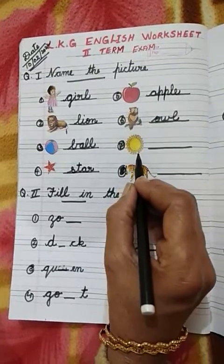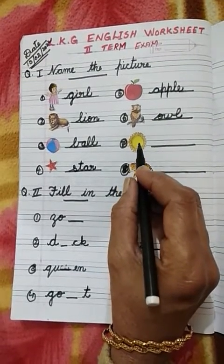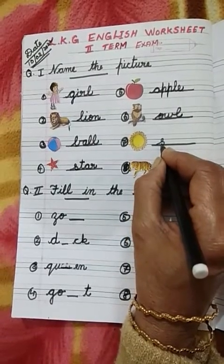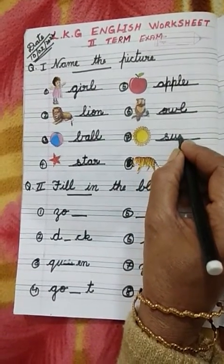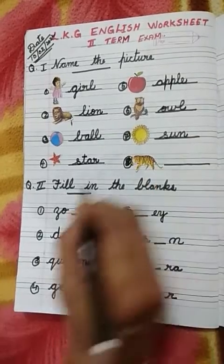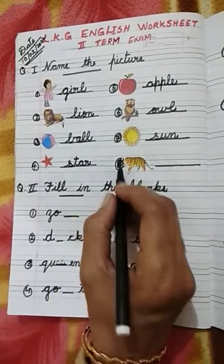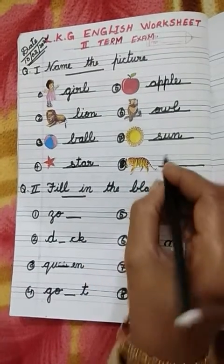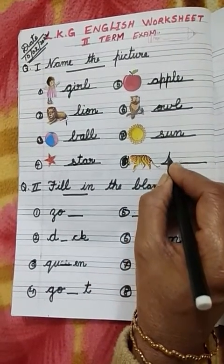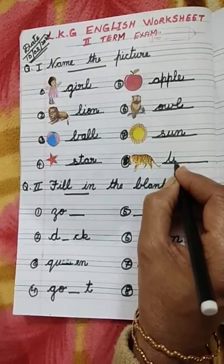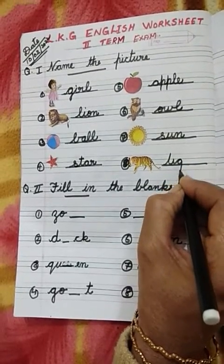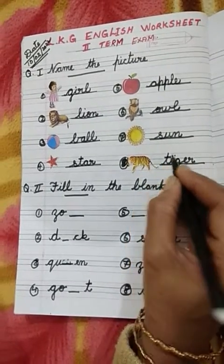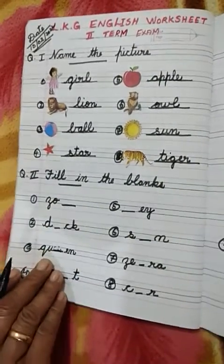Tell me children, what is this? Sun! Then spelling of sun: S-U-N. Sun. Number 8. Tiger! Then spelling of tiger: T-I-G-E-R. Tiger. Then the first question is finished.